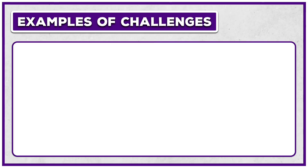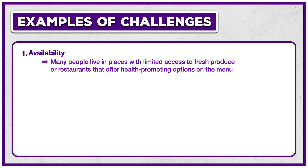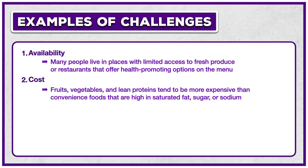I hope you took a moment to brainstorm some ideas. There are dozens of directions to take this question, so I can't cover every possible response, but I put down eight different challenges that are pretty common. Examples include availability — because many people live in places with limited access to fresh produce or restaurants that offer health-promoting options on the menu. And cost, because fruits, vegetables, and lean proteins tend to be more expensive than convenience foods that are high in saturated fat, sugar, or sodium.